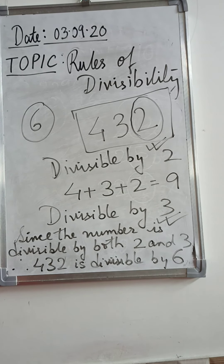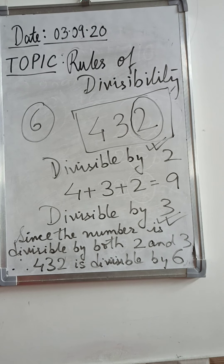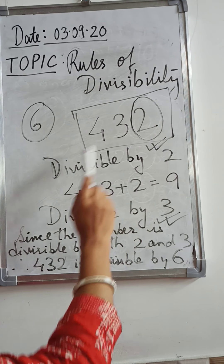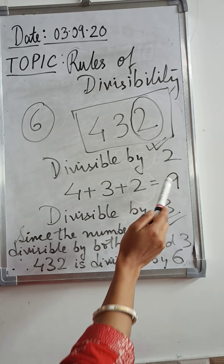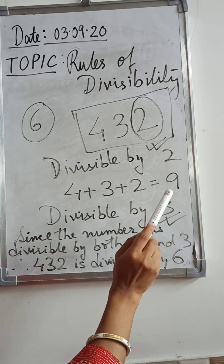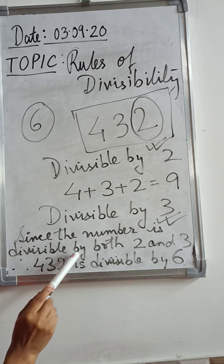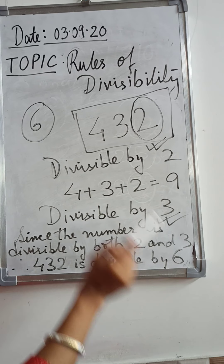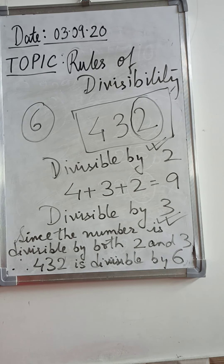Let me repeat: we took 432 and checked divisibility by 2 — last digit is 2, so yes. Then divisibility by 3 — sum of digits is 9, which is divisible by 3, so yes. Since 432 is divisible by both 2 and 3, we can say 432 is divisible by 6. This is the test for 6.